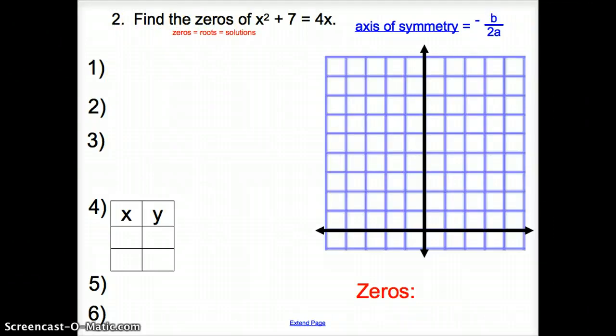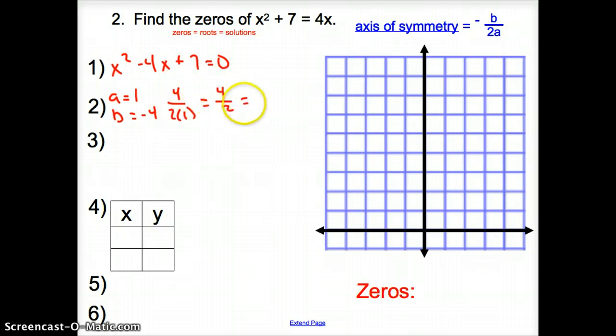Step one, we had to make sure that this equals zero. It does not, so let's subtract that 4x over. We have x squared minus 4x plus 7 equals zero. Notice how I put that 4x between the x squared and the 7 to put it in correct order. Our a is 1, our b is negative 4. For the axis of symmetry, it's positive 4 over 2 times 1, which gives me 4 over 2, which gives me an axis of symmetry of 2.